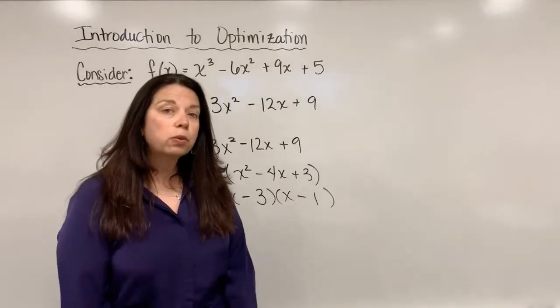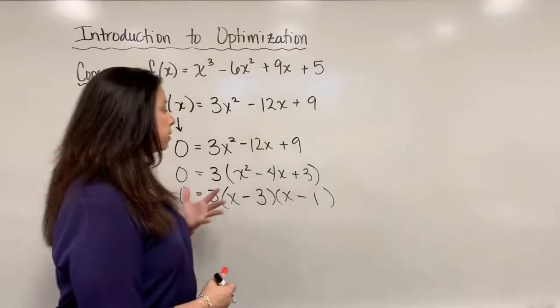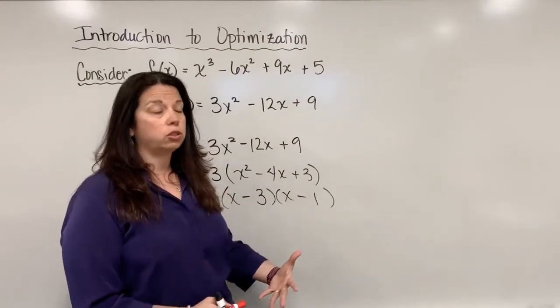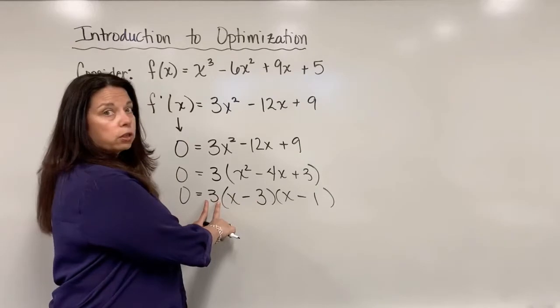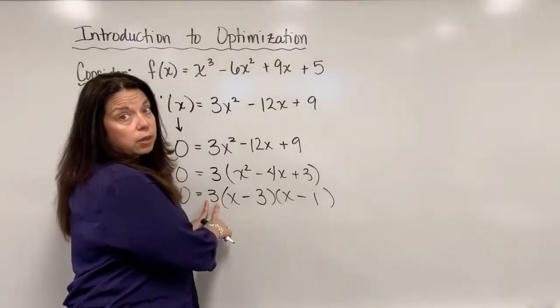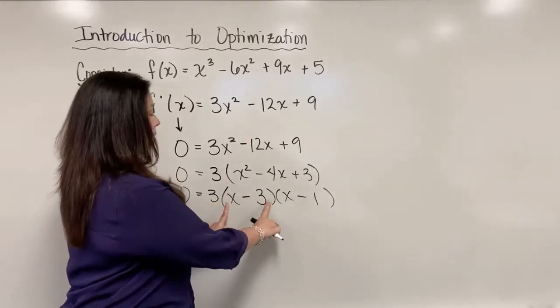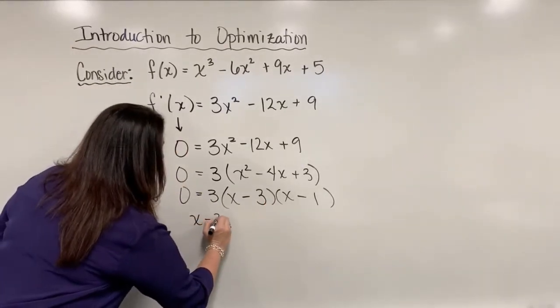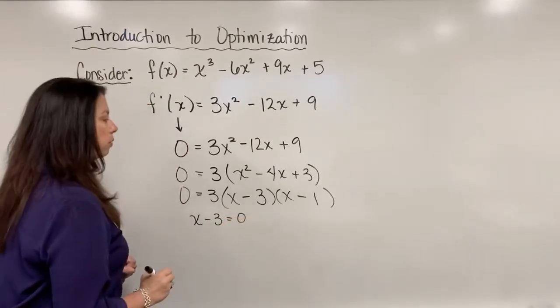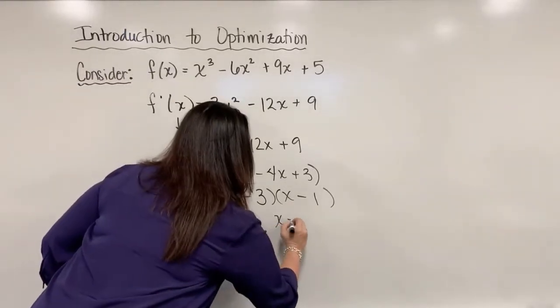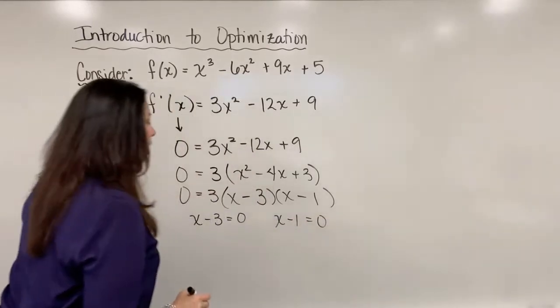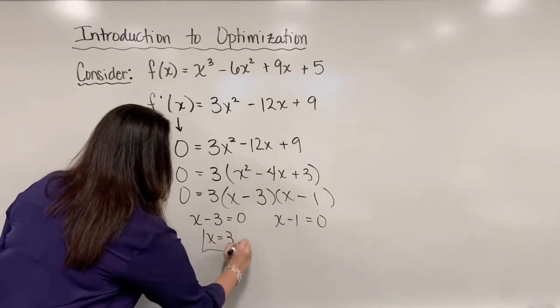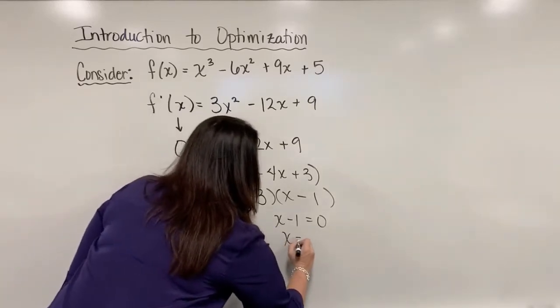Now what I need to do is set each one of those binomials to 0. We're using actually something called the 0 product property to be able to do this. So we don't need to solve for 3 because there's no x value here. 3 is just 3. But here there's an unknown of x in this. So we will take our x minus 3 and set that to 0. And we will do the very same thing with x minus 1 and set to 0. So I'll solve for both of those linear equations. In this case, x is 3. And in the other case, x is equal to 1.